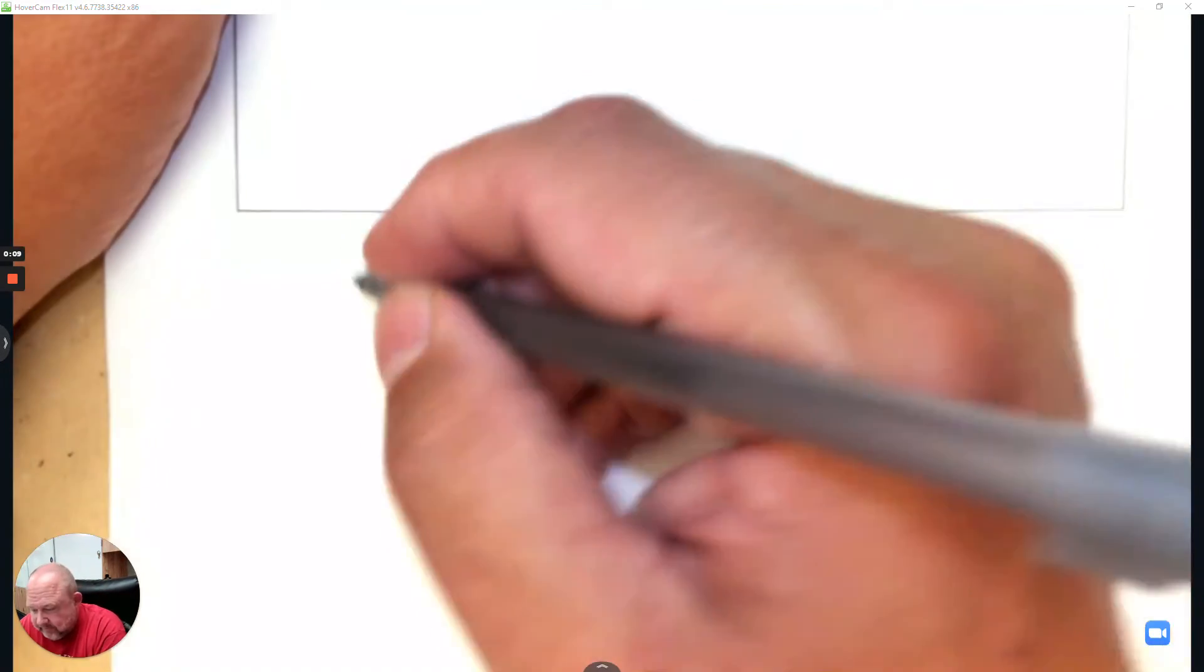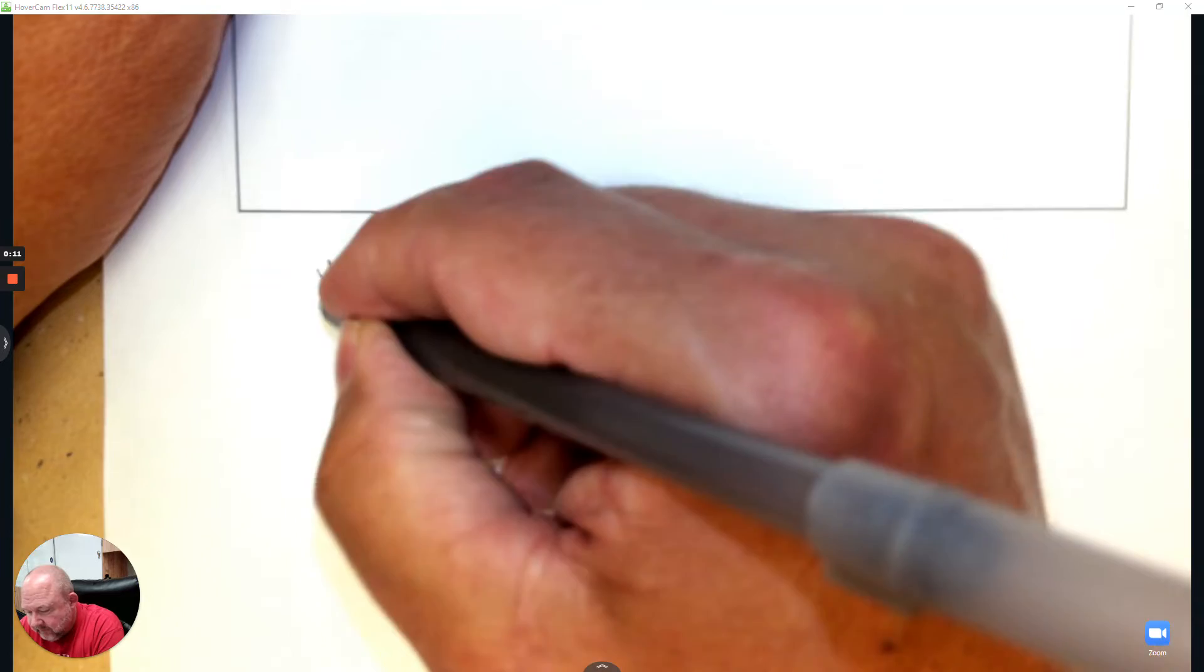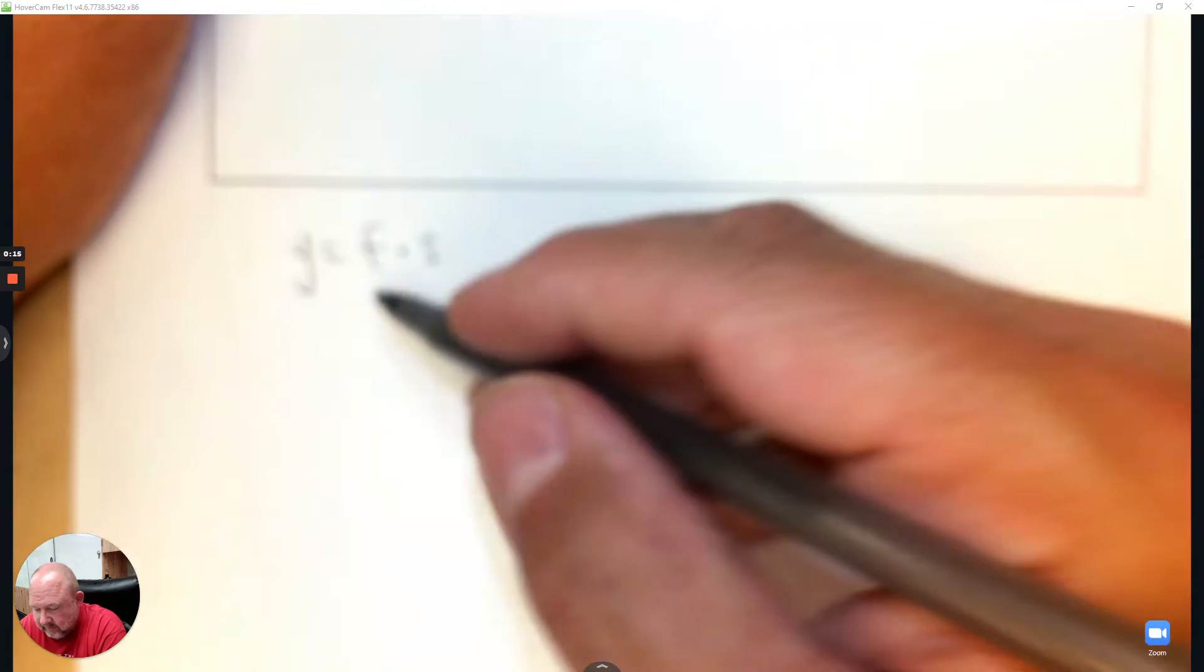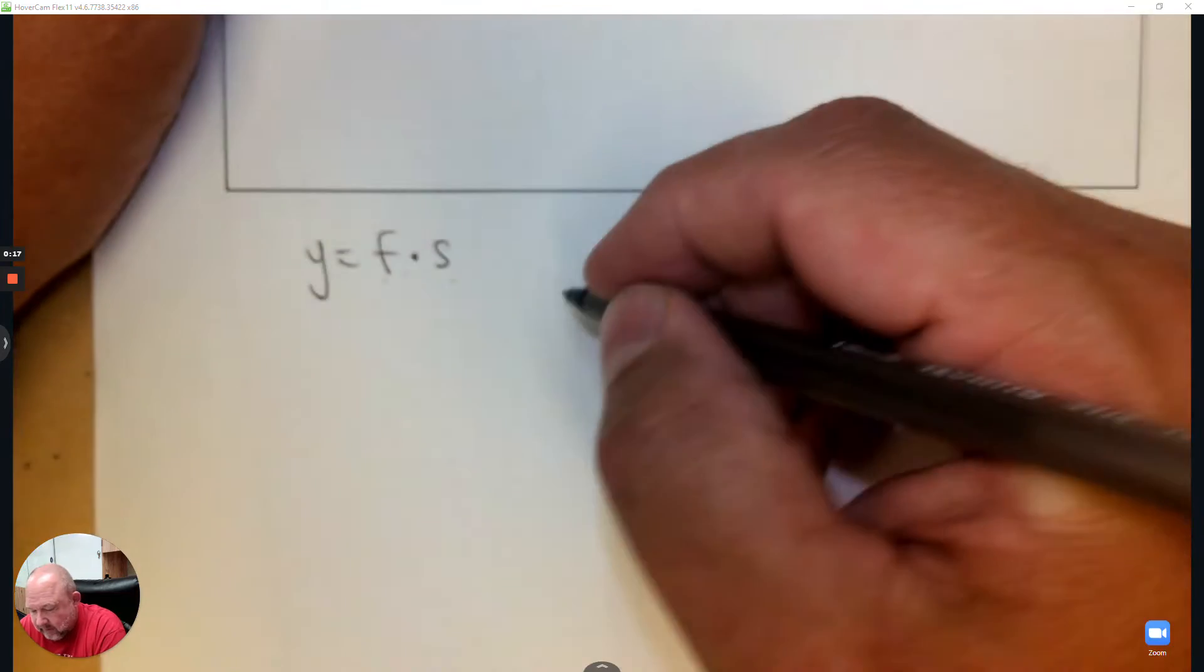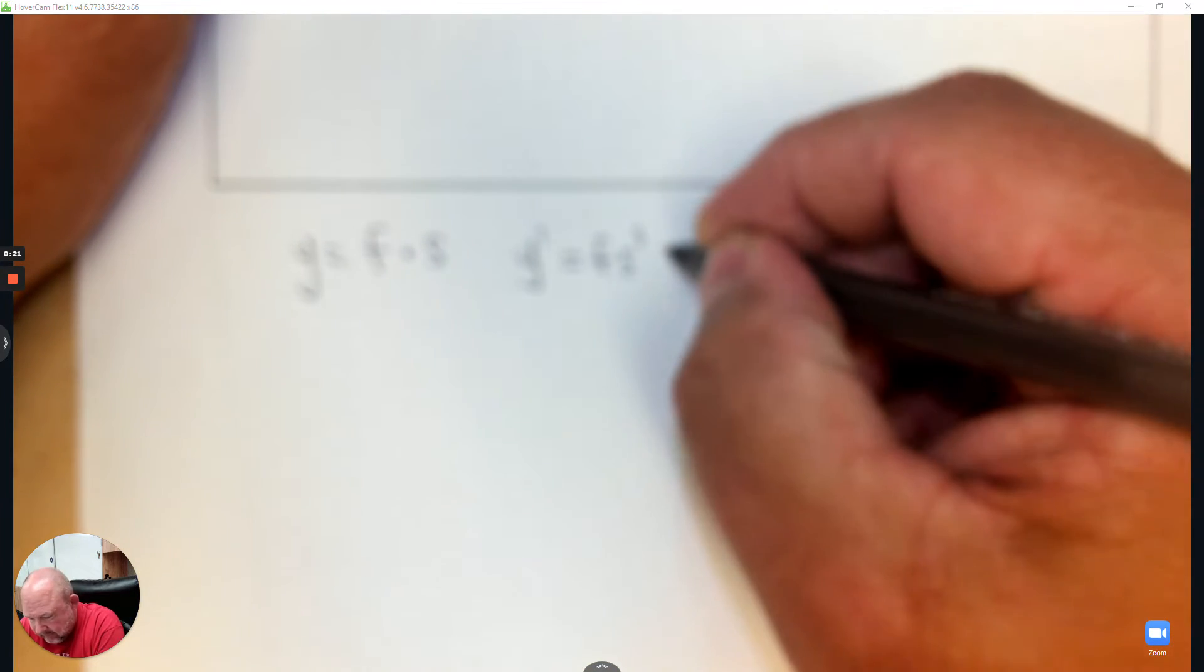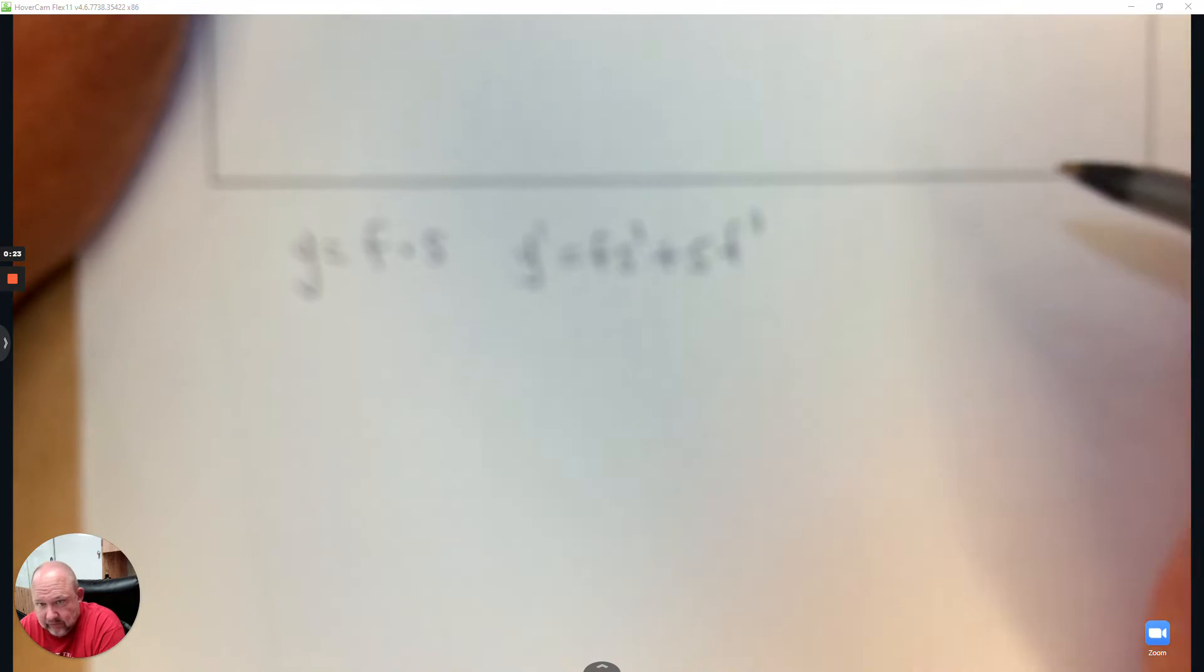So first of all, do you know it? If you have a function where you have a first times a second, whatever it is, you have something times something else, what is the product rule? Well, it's the first times the derivative of the second plus the second times the derivative of the first.